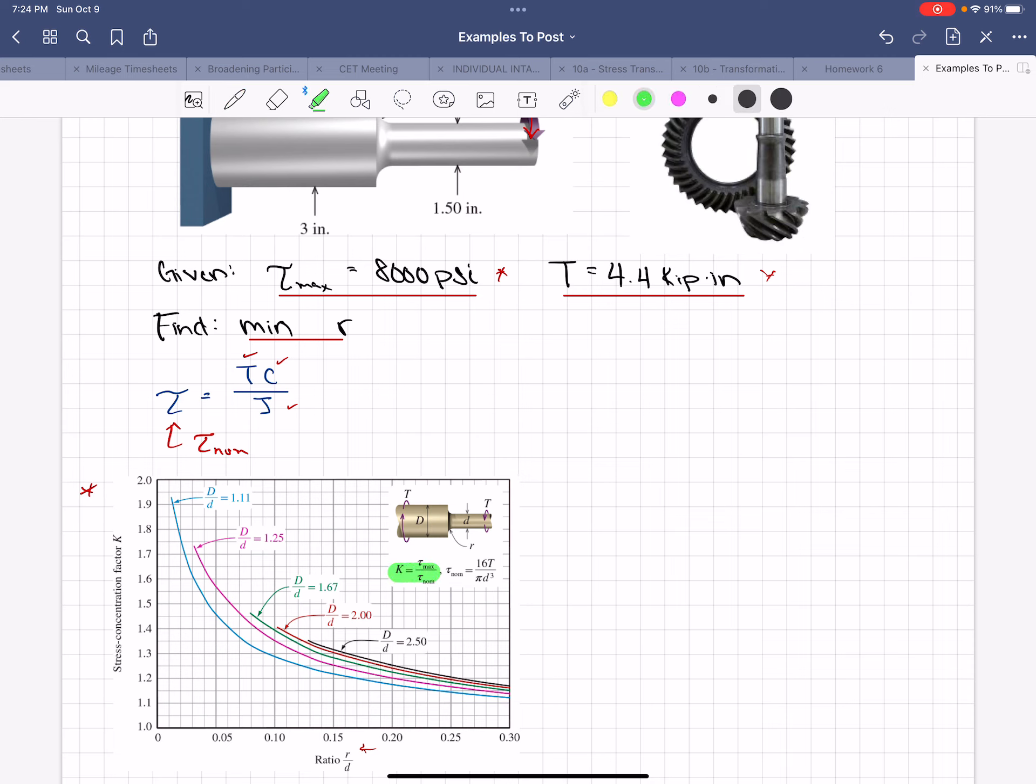And this torque is what we're going to be calling our tau nominal in both of these equations here, but we're going to start with this one. So that's the tau nominal there. All right, so then using the green equation, we know that tau nominal times k equals tau max.